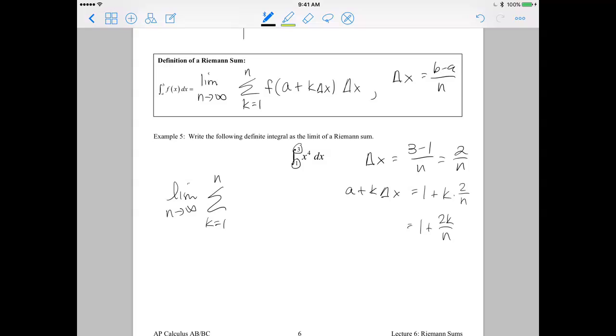Okay. Well, what the formula says here is that we do f of a plus k delta x, where f is the function that we are integrating. So in this case, we're integrating x to the fourth. And so f of a plus k delta x is just going to be what we found for a plus k delta x raised to the fourth power. So 1 plus 2k over n raised to the fourth.